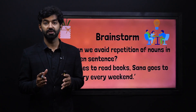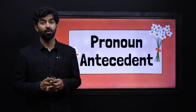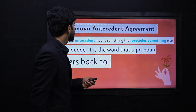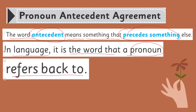Pause the video, solve this question, and then come back. My dear learners, the topic is about pronoun-antecedent. Let's define what an antecedent is in pronoun-antecedent agreement. The word antecedent means something that precedes something else. In language, it is the word that a pronoun refers back to. Precedes means that the antecedent is referring to and preceding the noun that came before.